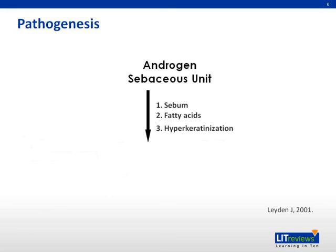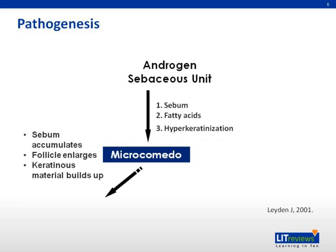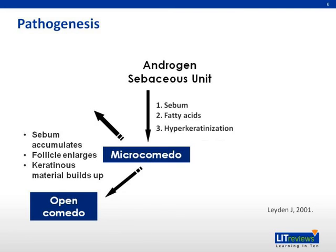This results in a partial obstruction called microcomedones. From there, sebum continues to accumulate, enlarging the follicle, and resulting in a mature keratinous plug. When this plug is formed very close to the epidermis, it is called an open comedone or a blackhead. Where this plug is produced lower down in the dermal portion of the follicle, this results in a closed comedone or a whitehead.